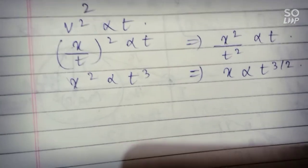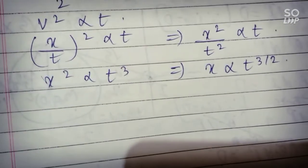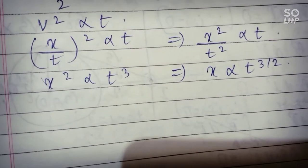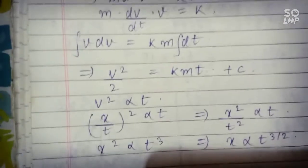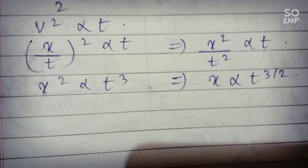Now on solving we get this, that X is directly proportional to T to the power 3 by 2. On solving all this we get this and this was among one of the options.